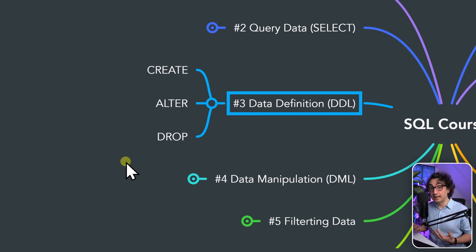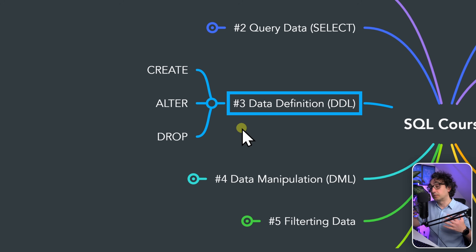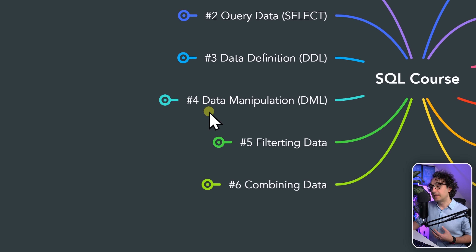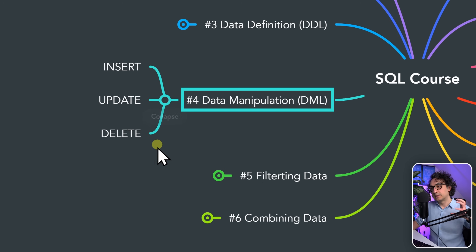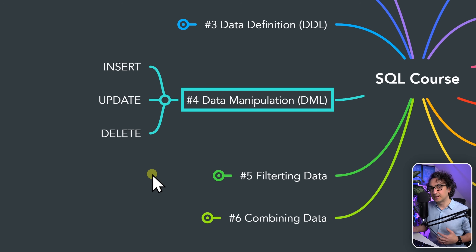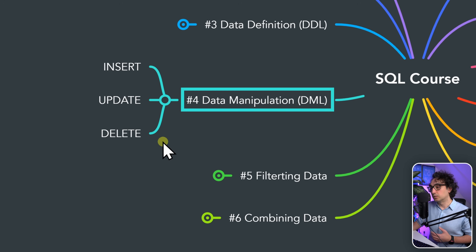The next step is learning how to define the structure of the database — how to create a new table, add a new column, remove a column, and how to drop a table. After that, the next chapter covers data manipulation: going inside the table to learn how to insert new data, update existing data, and delete rows.